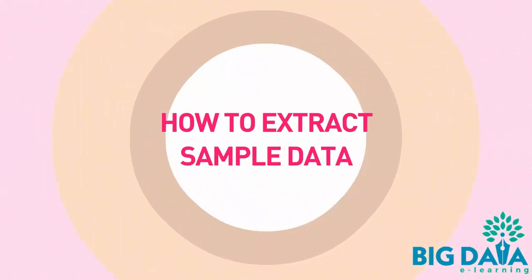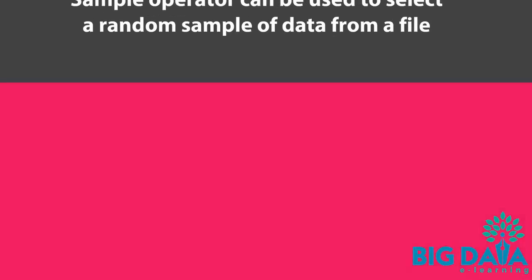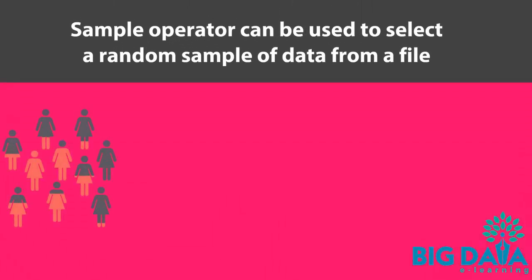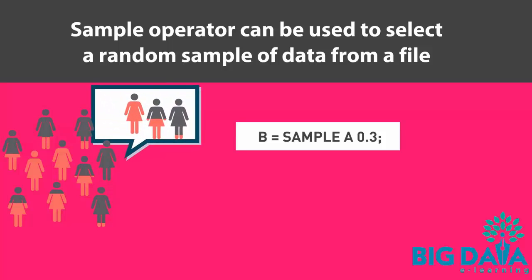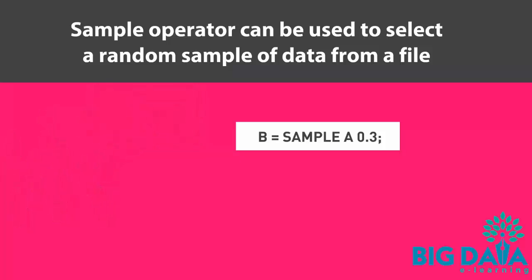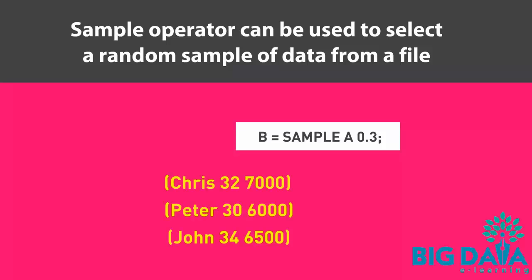How to extract sample data. The sample operator can be used to select a random sample of data from a file. For example, if we need to select a random sample of tuples from our relation A, then we can use the sample operator. In the example, 0.3 represents 30%, which means one-third of the data will be displayed as sample. This lists one tuple, which is 30% of the data in the original file.